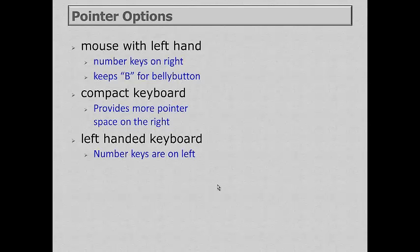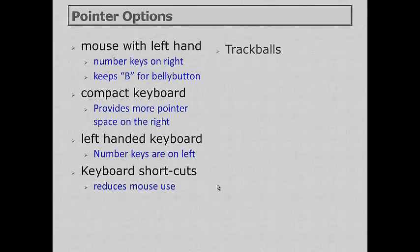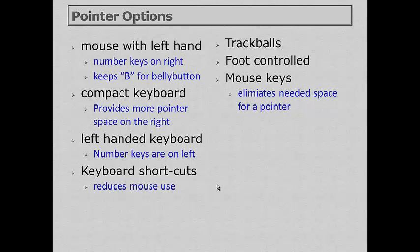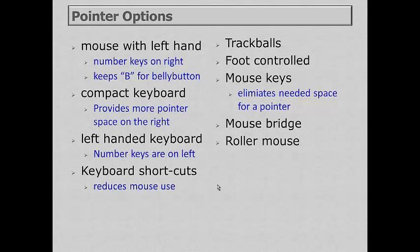A left-handed keyboard puts the number and navigation keys on the left side, allowing the mouse on the right. Keyboard shortcuts are a great time saver — they reduce the number of times you have to move from keyboard to mouse and save time traveling the mouse around the screen. Some people find trackballs to be more accurate than a mouse. There are foot-controlled options for the mouse, as well as mouse keys built into Windows, which can eliminate problems with space for a pointer. A mouse bridge and roller mouse are also options.